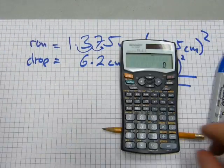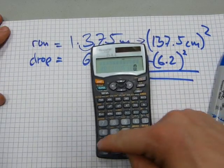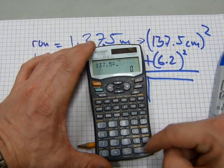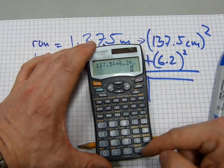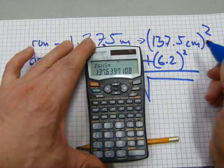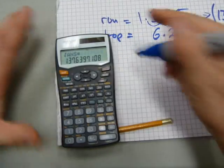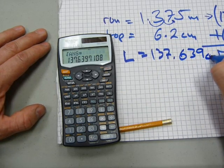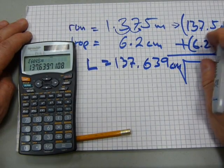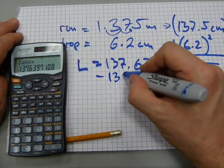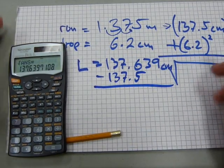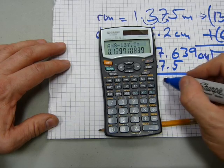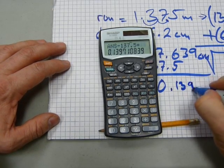137.5 squared plus 6.2 squared equals second function, square root sign equals. That's the length of pipe equals 137.639 centimeters. It used to be 137.5. So I'm just subtracting the original length of it. Minus 137.5 centimeters is, the difference is 0.1397 centimeters.